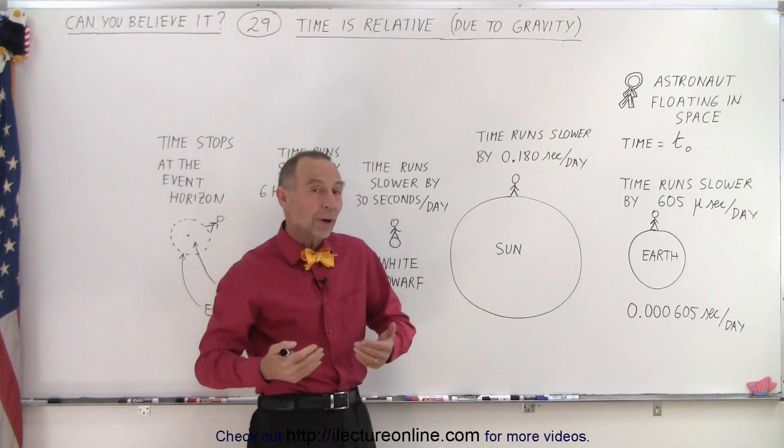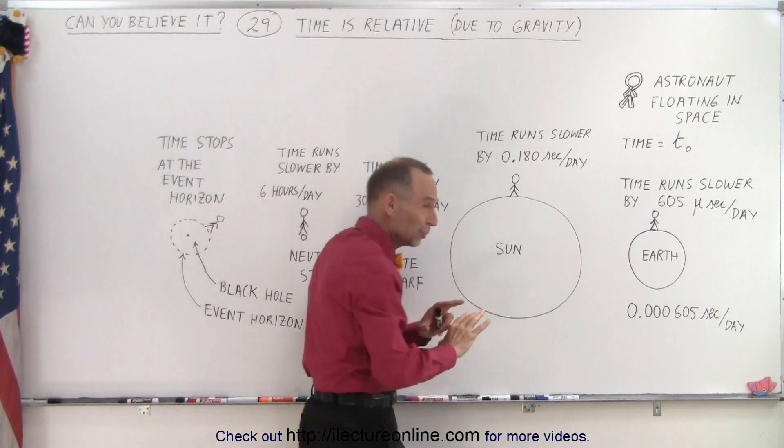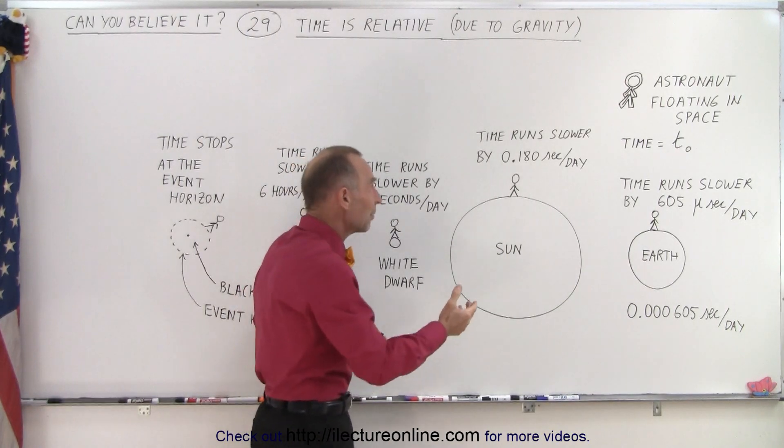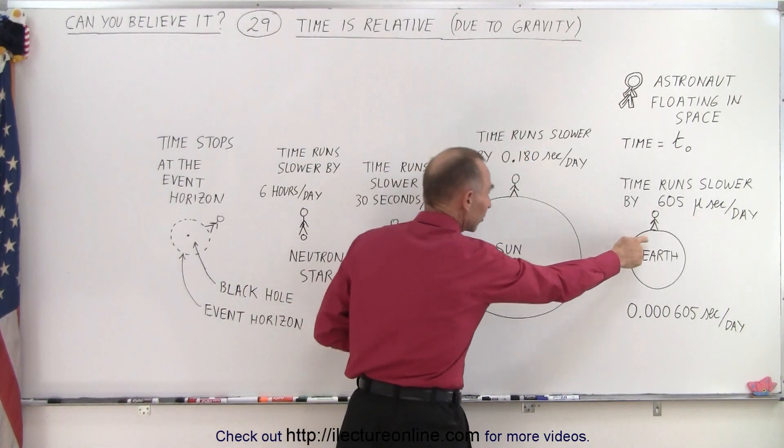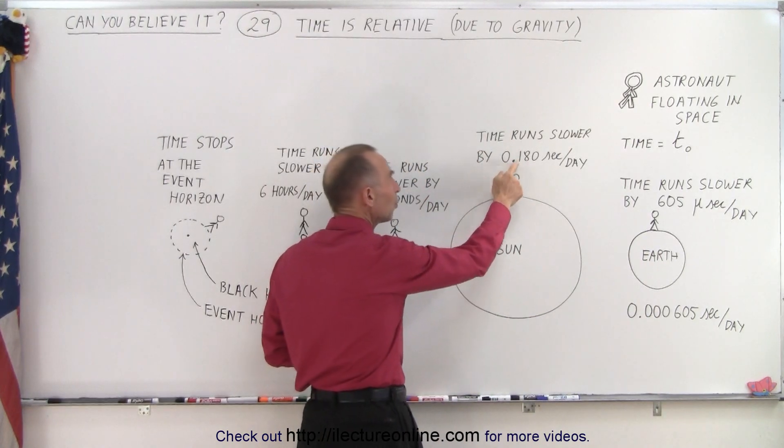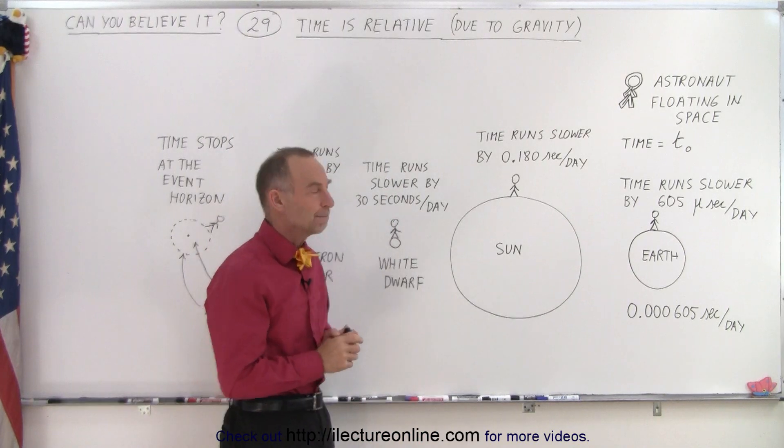If we then had the right spacesuit and the right asbestosuit on, if we stood on the surface of the Sun, which of course we know is completely impossible, but if we could, you'd find that time runs even slower than when you're standing on the surface of the Earth. At that point the time will slow down by 0.18 seconds per day, about two-tenths of a second per day.